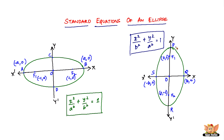The coordinates of vertices P and R on the major axis are zero comma a and zero comma minus a. The coordinates of vertices on the minor axis — C and D — are b comma zero and minus b comma zero, since they lie on the x-axis with length b. The major difference between the two forms of an ellipse is that the major axis is horizontal in the first form and vertical in the second.